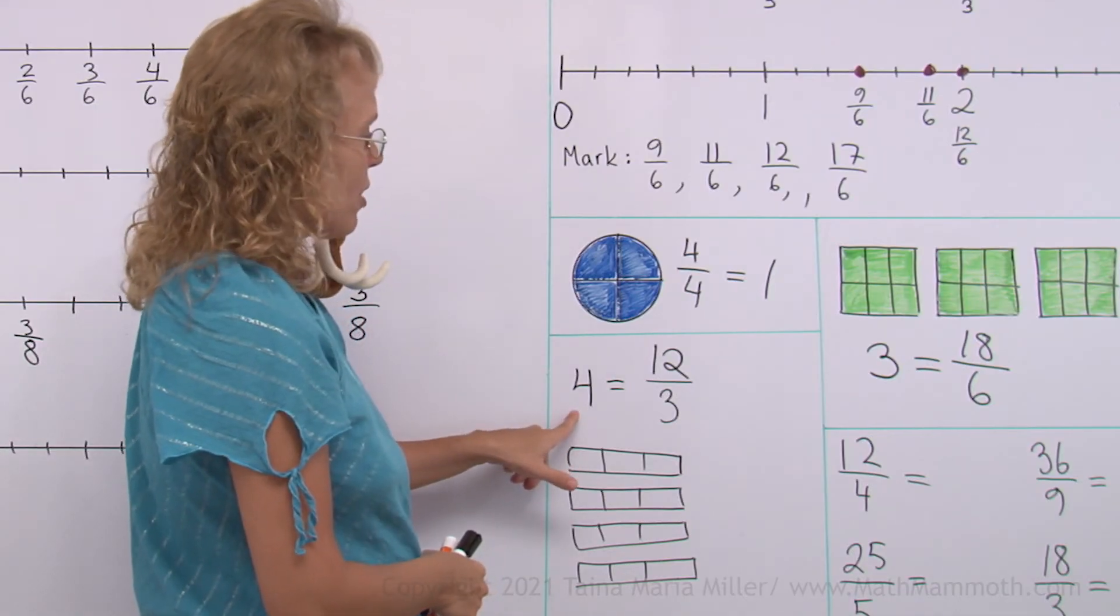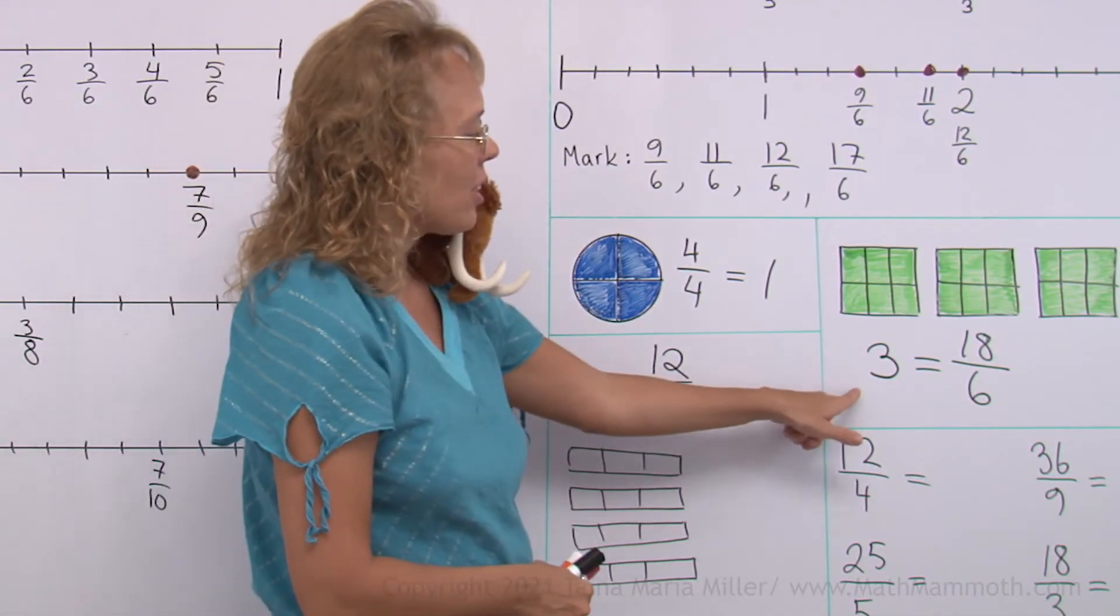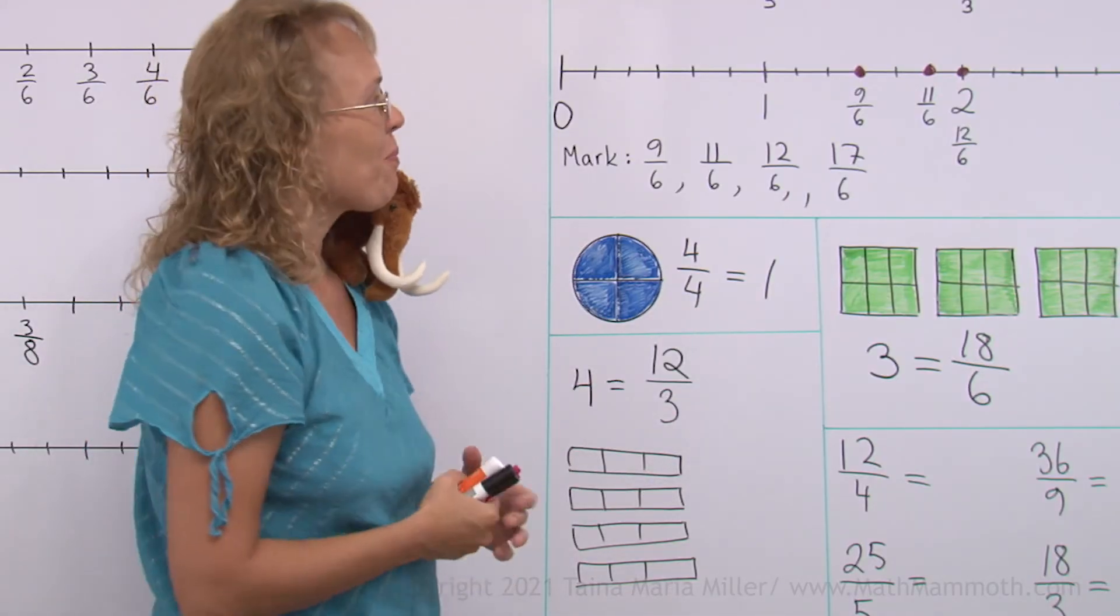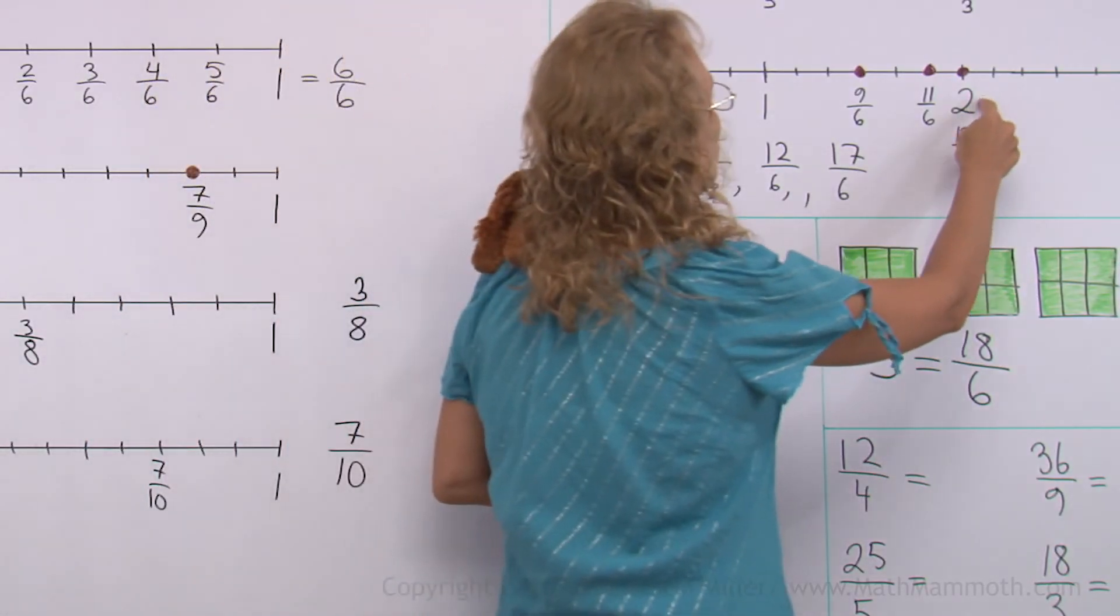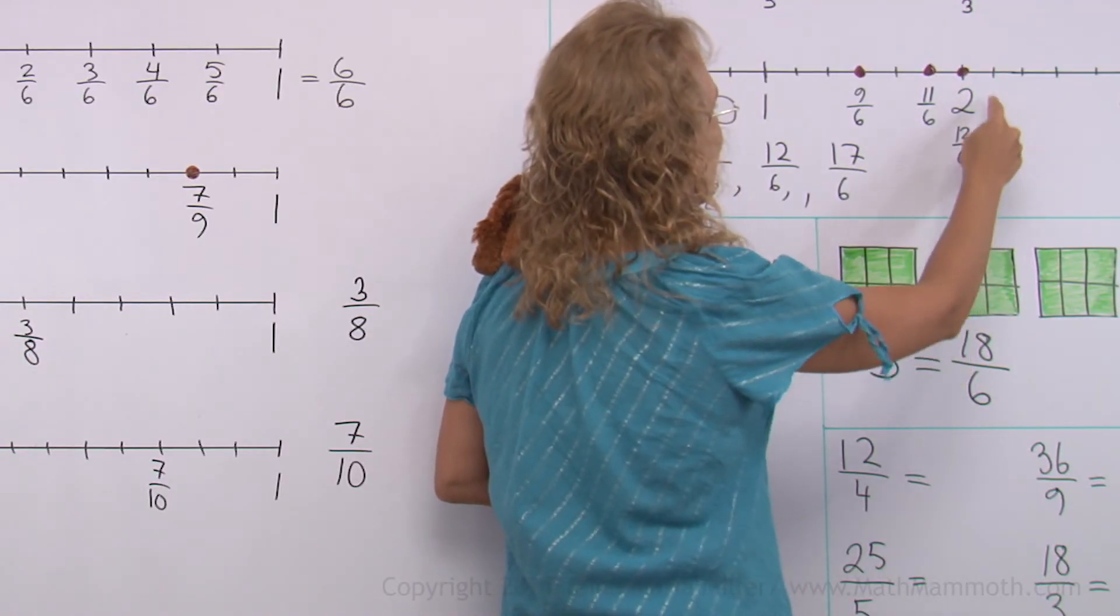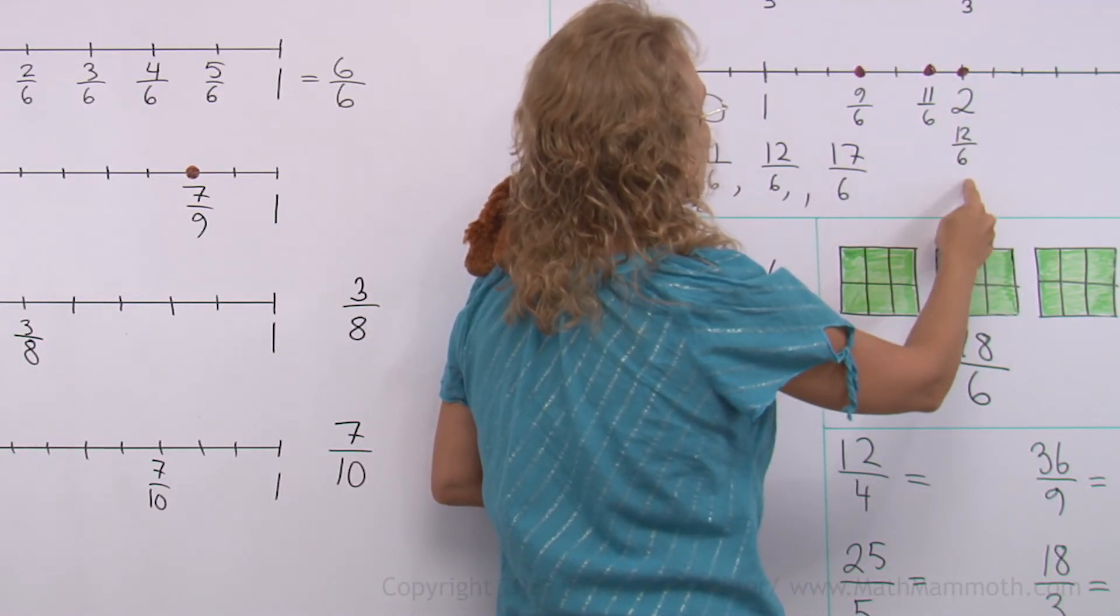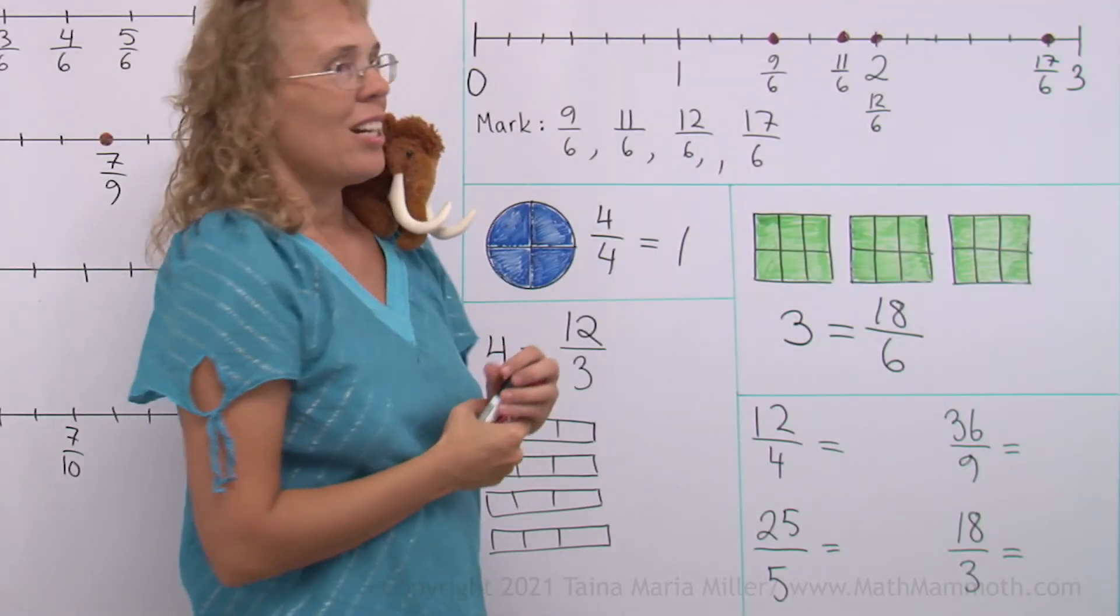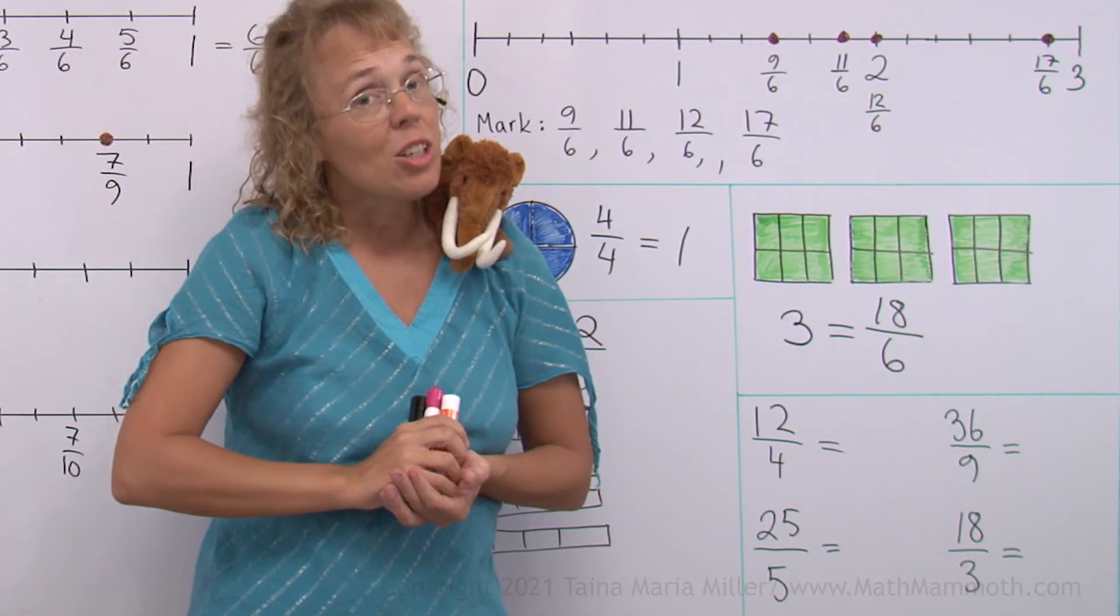So whole numbers like 4, or 3 over here, or 1, or we saw one more on the number line. If you saw, we have 2 here written as a fraction. 2 is a whole number, 12 sixths. We can write whole numbers as fractions. And then sometimes fractions can be written as whole numbers.